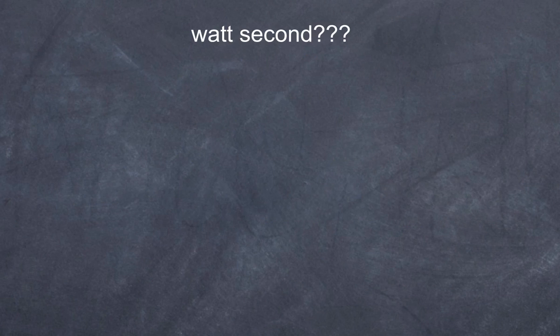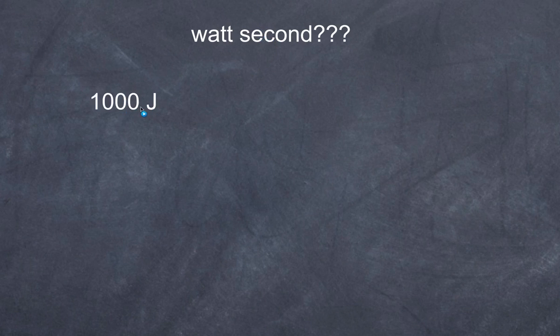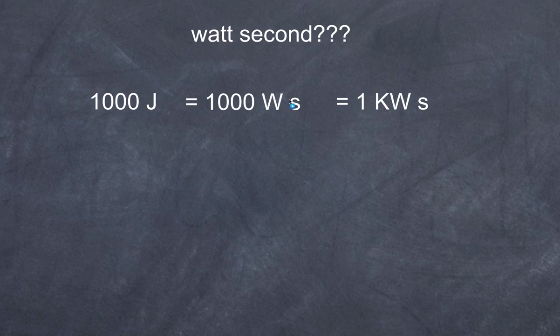Why don't electricity companies just use the watt-second or the joule? Because the amount of energy you use as a joule is so small that charging you in joules would mean a very small fraction of a cent. The electricity company prefers to charge you for a larger value. Let's start with a thousand joules — a thousand watt-seconds. But a thousand watts is a kilowatt, so a thousand joules equals one kilowatt-second.